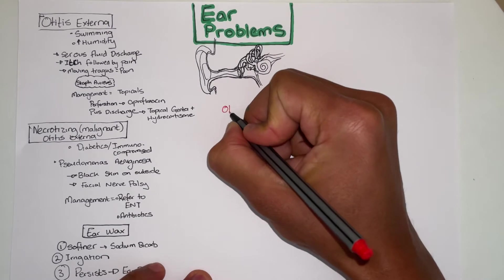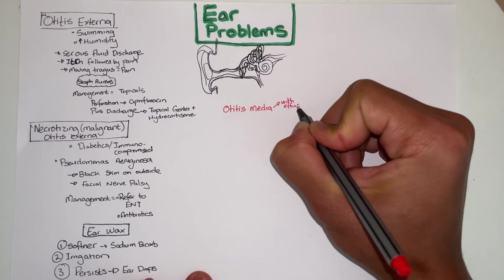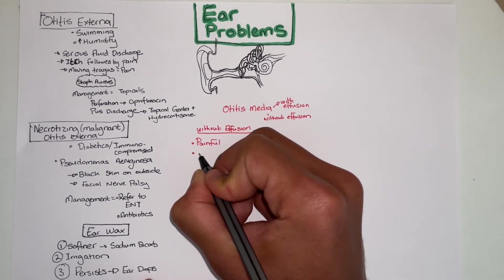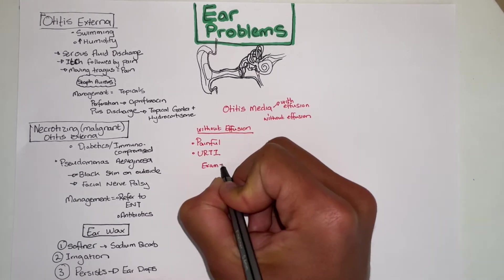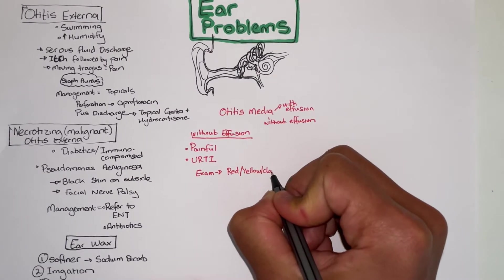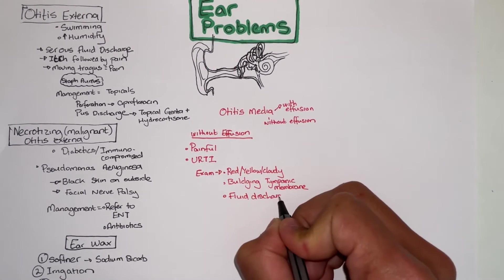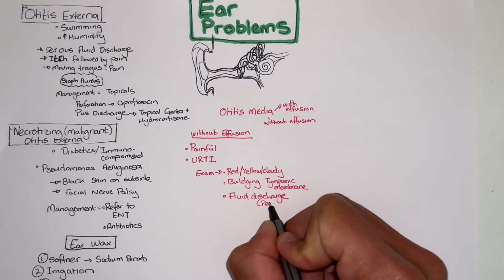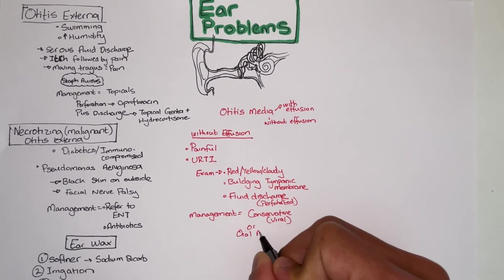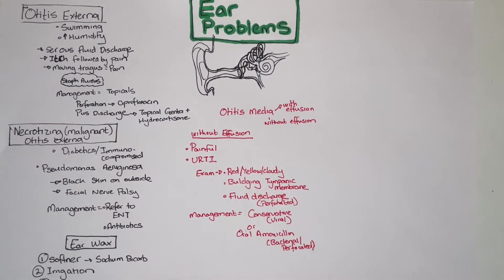Next let's look at the middle ear. Otitis media is the infection of the middle ear. There are two types with effusion and without effusion. Without effusion is painful and usually follows an upper respiratory tract infection. On exam by otoscope you will see a red, yellow or cloudy bulging tympanic membrane. You might find fluid discharge if the tympanic membrane is perforated. The management is usually conservative if it's viral and if it's bacterial then oral amoxicillin.